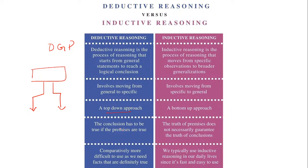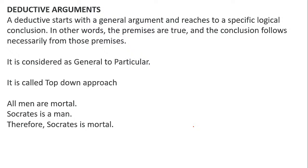Inductive reasoning is the process of reasoning that moves from specific to general — IPG, from particular to general. It is a bottom-up approach. The truth of the premises does not necessarily guarantee the truth of the conclusion. A deductive argument starts from general statements to a specific logical conclusion; if the premises are true, the conclusion necessarily follows from those premises. For example: 'All men are mortal. Socrates is a man. Therefore, Socrates is mortal.'